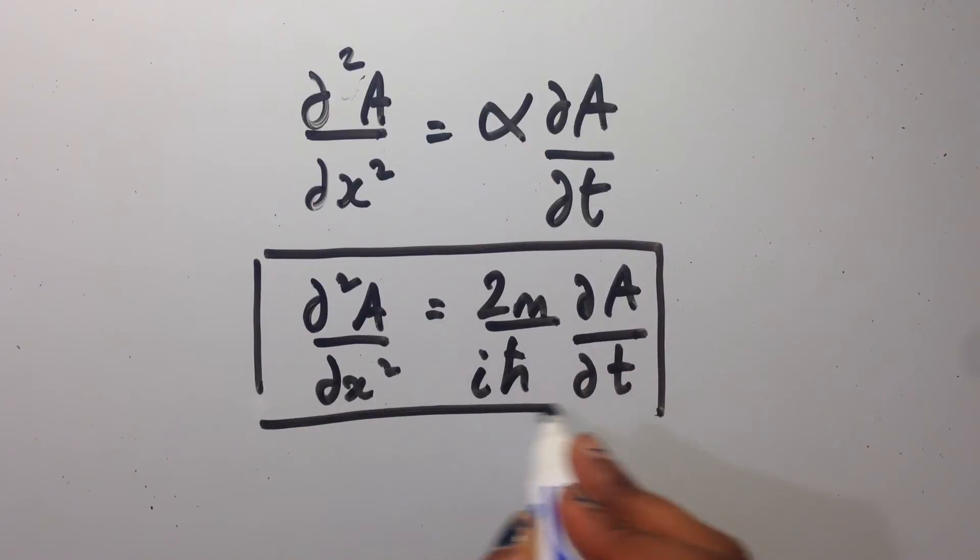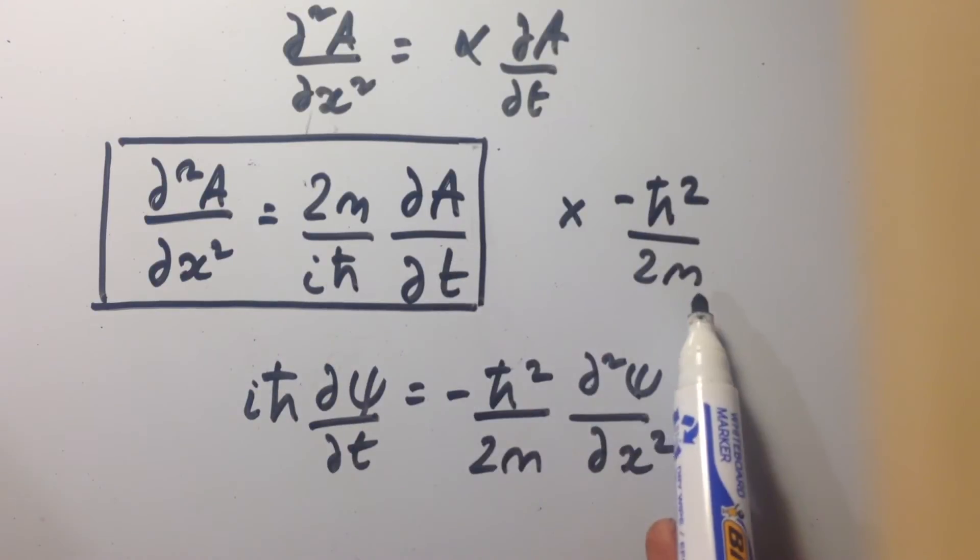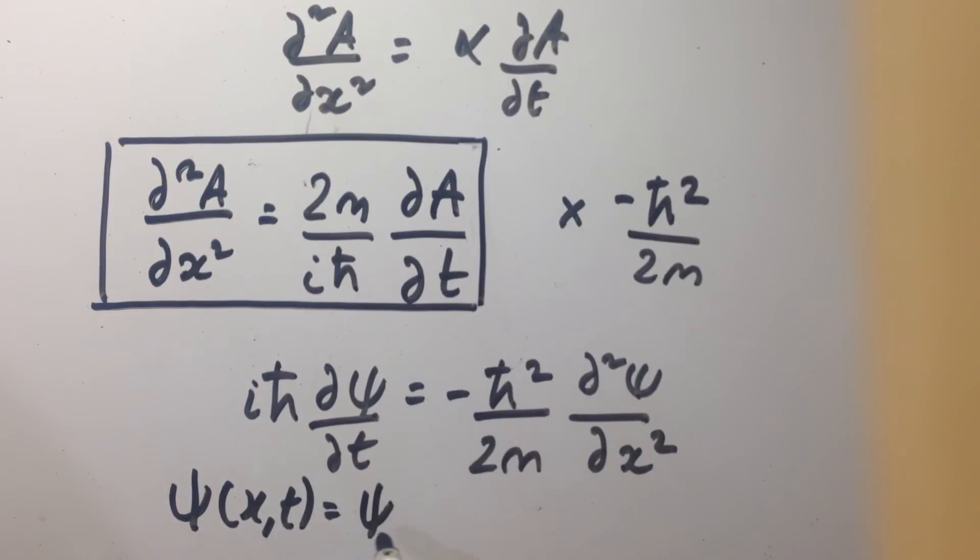We then plug in our alpha back into the equation we considered earlier. Multiplying both sides by minus h bar squared over 2m gives us our Schrödinger's equation for a free particle. With psi being our solution to the equation which is a wave function.